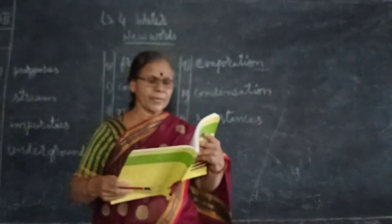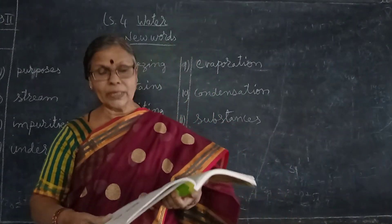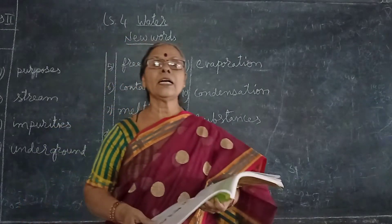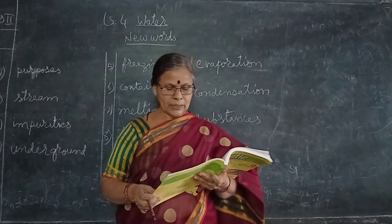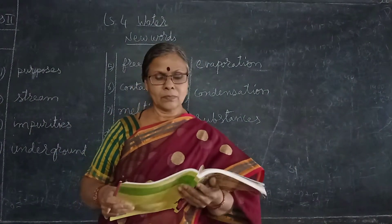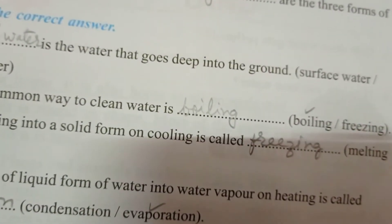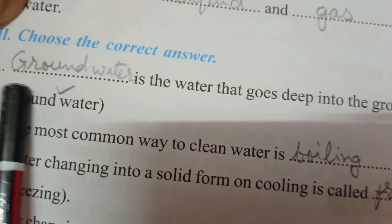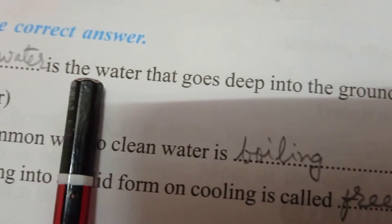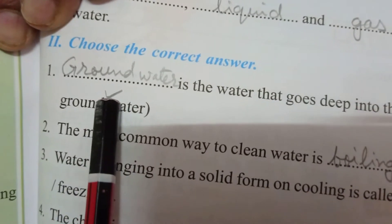And then one more bit we will do — choose the correct answer, page number 221. Then third bit you have to do by yourself — name the sources of water. Do the choose the correct answer — I will show you. Please look at the textbook. The water that goes deep into the ground is called ground water. Ground water is the correct answer — put a tick mark on ground water.